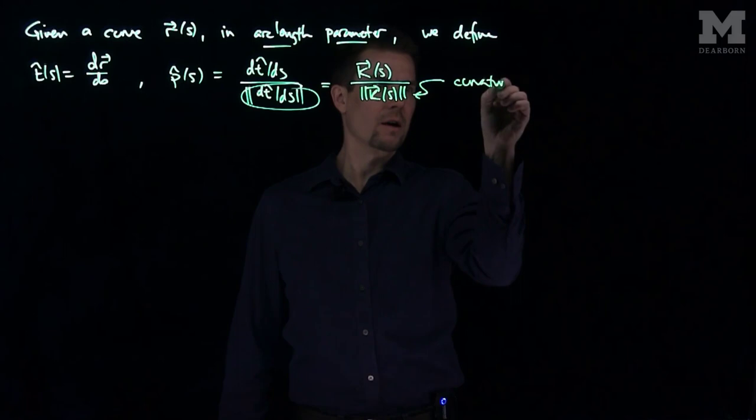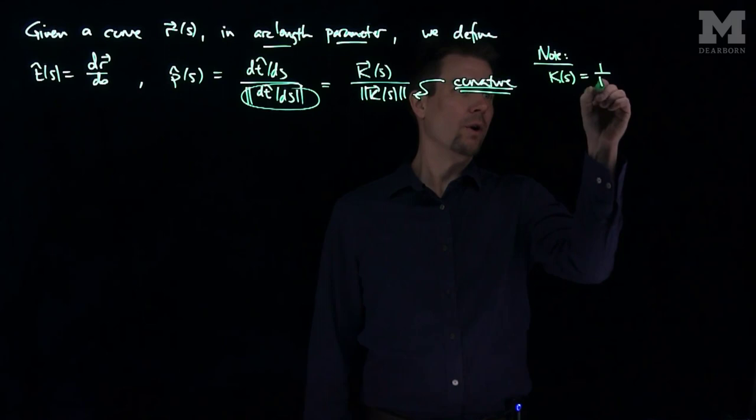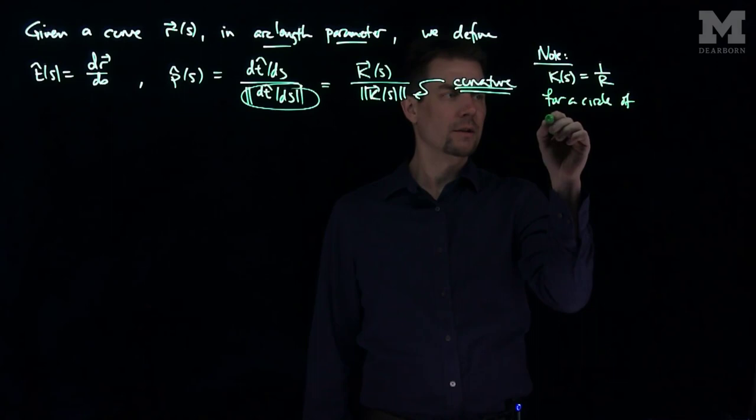And this denominator is called the curvature of a curve. And we saw the curvature of a circle is the reciprocal of the radius, right? And so we note curvature is 1 over r for a circle of radius r.